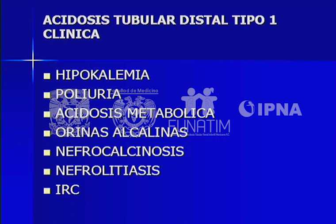El cuadro completo de la acidosis tubular distal tipo 1 incluye: acidosis metabólica, hipercalciuria, hipocitraturia, nefrocalcinosis, nefrolitiasis y retraso del crecimiento. Si agregamos la hipocalemia y la deshidratación por poliuria, encontramos un cuadro que prácticamente se diagnostica solo. La hipocalemia crónica trae alteraciones tubulointersticiales con nefropatía tubulointersticial y poliuria. No se puede decir que un niño tiene acidosis tubular distal si no tiene nefrocalcinosis e hipocalemia.